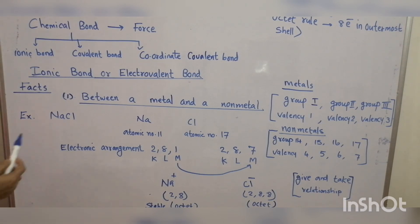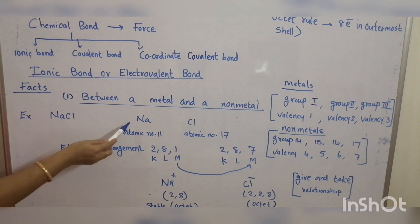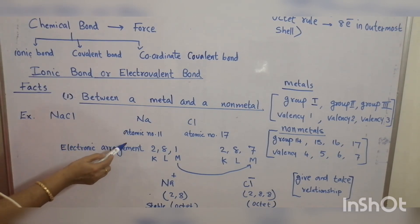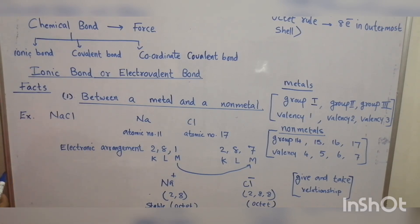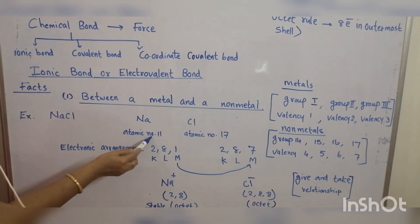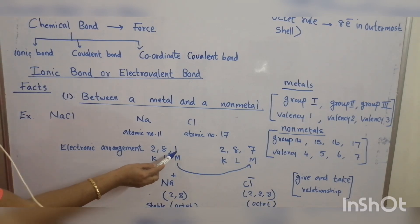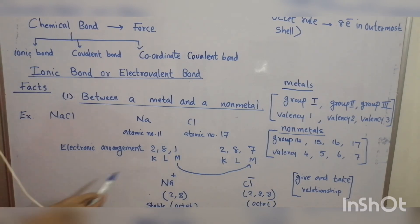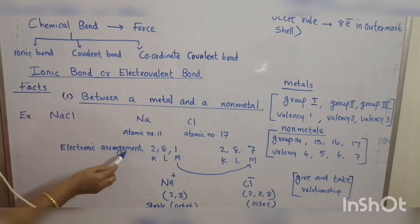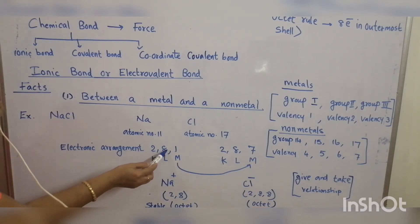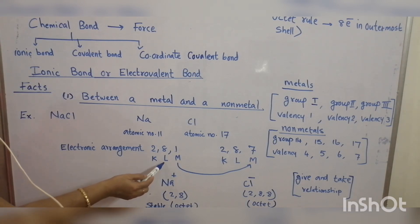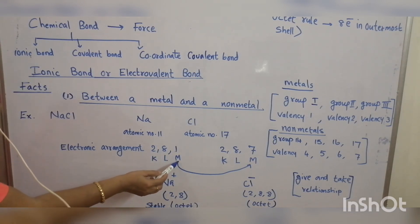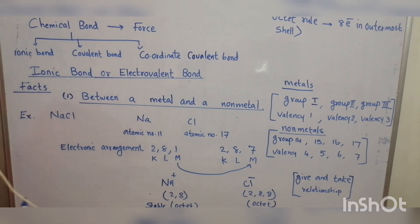Let us take the example of sodium chloride. Sodium is a group 1 element, atomic number 11 and valency is 1. It has only 1 electron in the outermost shell. Electronic arrangement is 2, 8, 1 — K shell has 2 electrons, L shell has 8 electrons and M shell has only 1 electron.